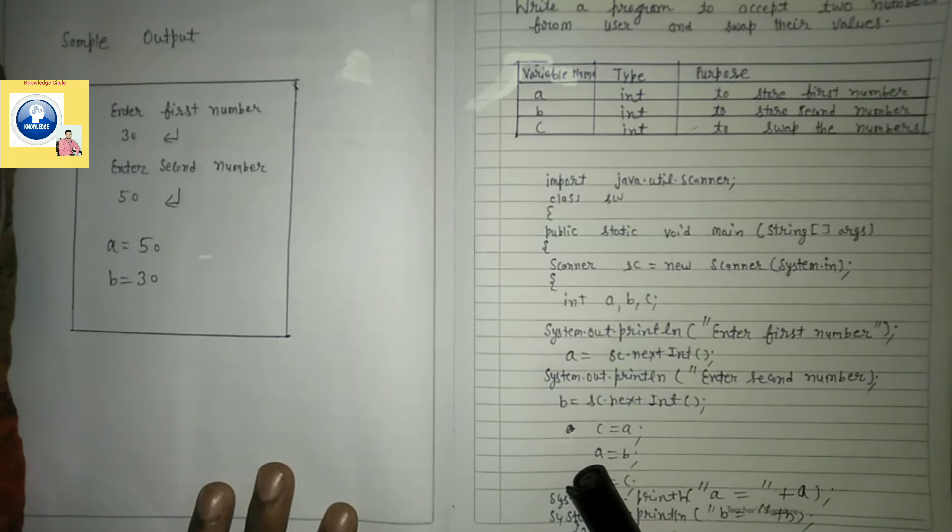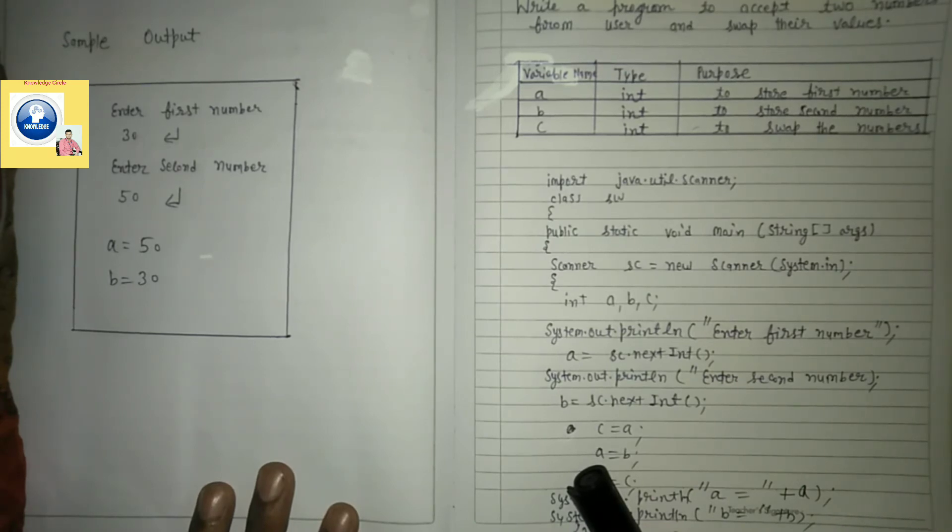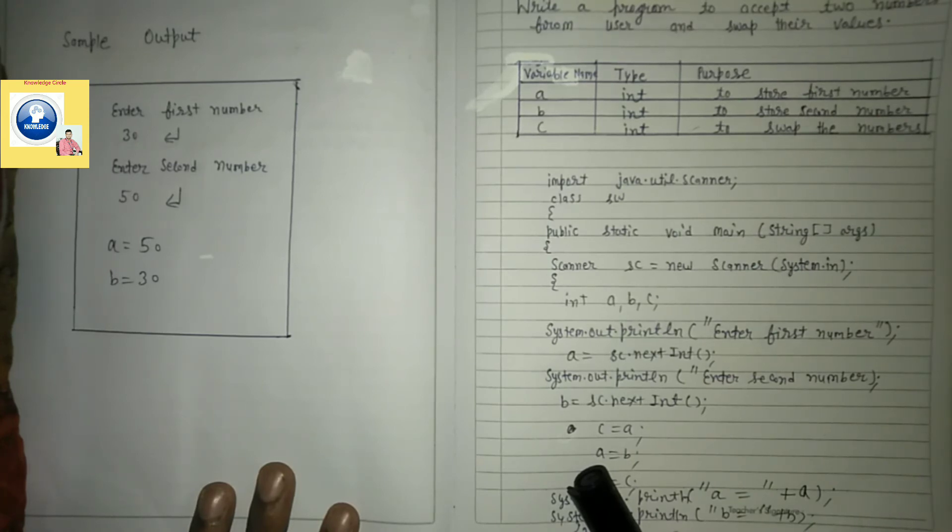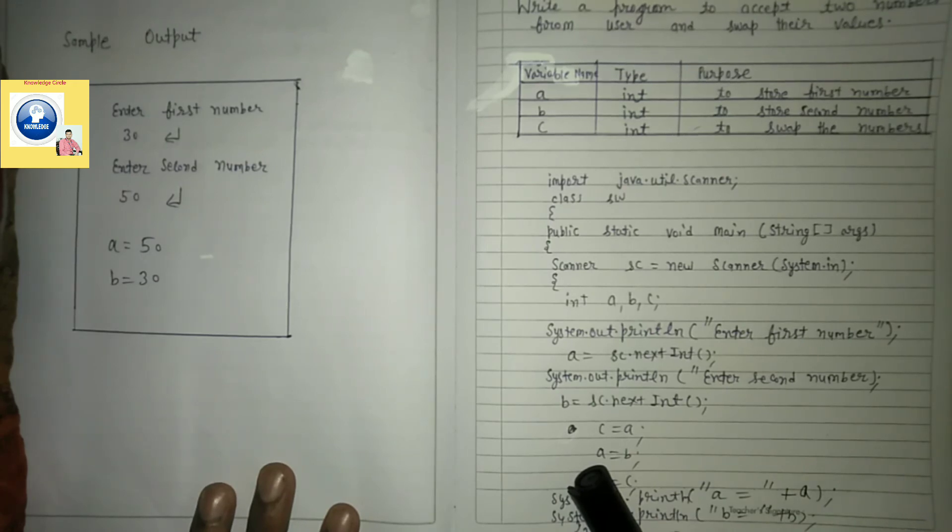So this was the only information for all of you. Whatever programs have been taught till now, in a sequence write down those programs. Write down the program number and also mention the date. Don't forget to mention the date. So that's what you all have to follow. Do it properly and keep on studying well.